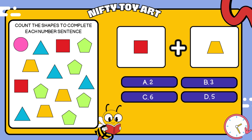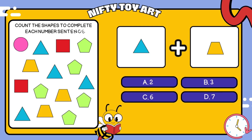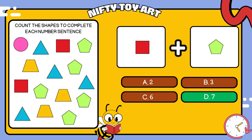I have a square plus trapezoid. How many all together? That's right, seven.